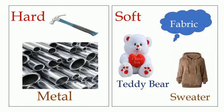Materials can be hard, like this hammer. It is made of metal, and metal is hard. Materials can be soft, like a sweater and teddy bear. They are made of fabric. Fabric is soft.